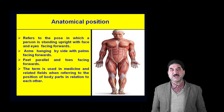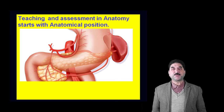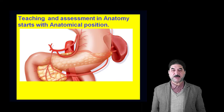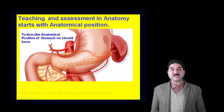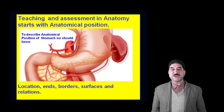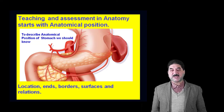Teaching and assessment in anatomy starts with anatomical position. For example, to describe the anatomical position of the stomach, we should know the location, ends, borders, surfaces, and relations of the stomach. In this diagram, the stomach is in normal anatomical position with its upper end facing upwards, lower end facing downwards, lesser curvature facing to the right, and greater curvature facing to the left. Posteriorly, the stomach rests on the body of the pancreas.